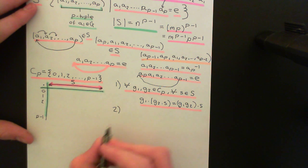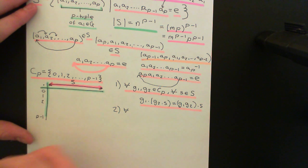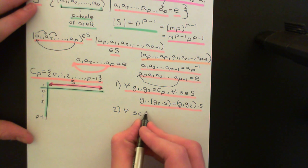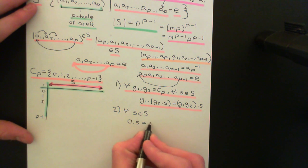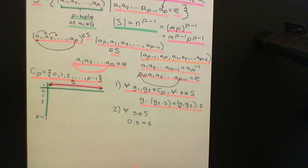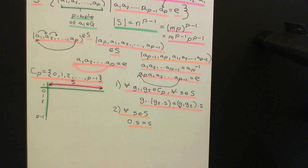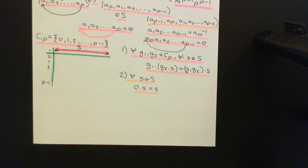Axiom two is that the identity element of the group must act on all elements of the set to give that element back. For all little s in capital S, 0 acting on s must give s. We know that's true, because it doesn't cycle the entries at all — it moves everything along by nothing, which doesn't change where the entries are, so you stay with the same element of the set. So indeed this is a group action.